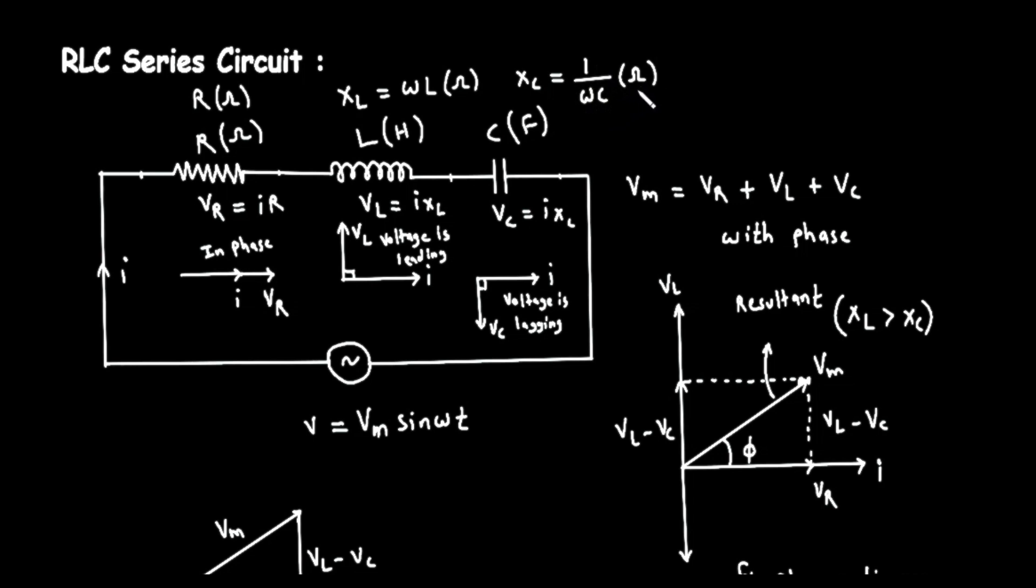The voltage across the capacitor is V sub C, which is equal to the current I multiplied by the capacitive reactance X sub C. The small diagram for the capacitor shows that the voltage is lagging the current. This is the exact opposite of the inductor. The voltage reaches its peak value after the current does. It lags by 90 degrees. If the current is a horizontal line, the capacitor's voltage points straight down.